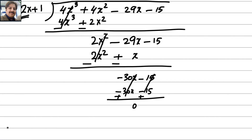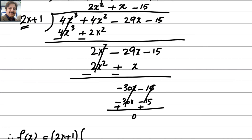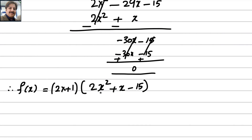So f of x equals 2x plus 1 times 2x squared plus x minus 15. This is not complete factorization yet — the quadratic 2x squared plus x minus 15 has highest power 2, so there are two more factors to find.